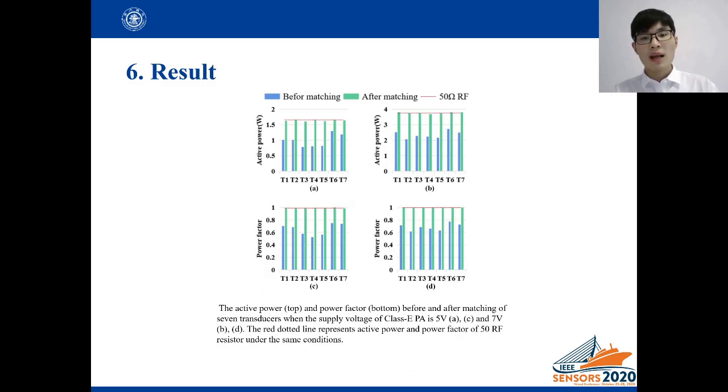This slide shows the comparison before and after matching under the class E power amplifier. The mean active powers of the 7 transducers have been increased by 66% and 59%, high percentage, and the mean power factors have been increased by 53% and 46% with a dynamic impedance matching network under the conditions of 2 supply voltages of class E power amplifier.